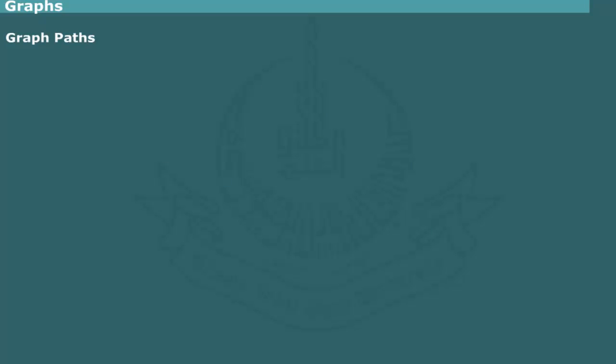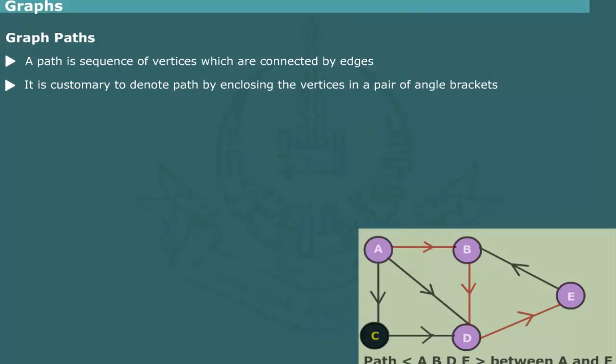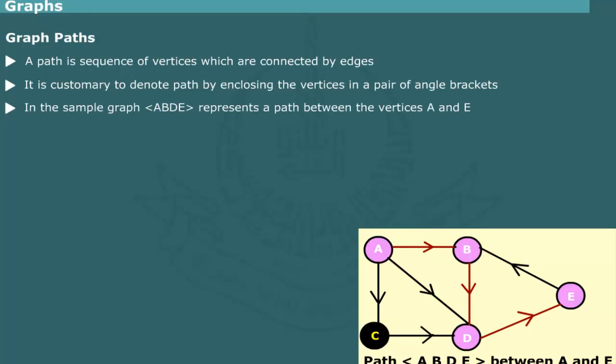Graph Paths: A path between a pair of vertices is a sequence of vertices in the graph which are connected by successive edges. We can denote the path by enclosing the list of vertices in a pair of angle brackets. For example, in the figure, <a,b,d,e> represents a path between vertex a and e. The length of a path is the number of edges that occur along the path.